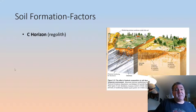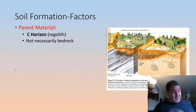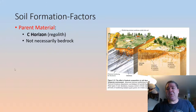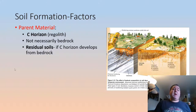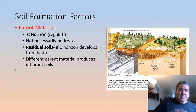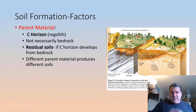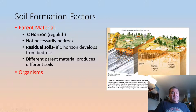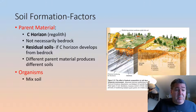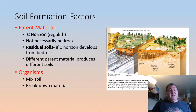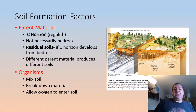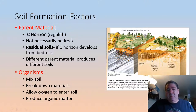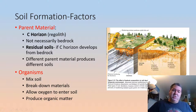The C horizon doesn't have to be bedrock. Here in Michigan, soils often develop on glacial till — a loose, unconsolidated sediment. When soils develop from bedrock like limestone or granite, they're called residual soils. The chemistry and physics of that parent material will have a big impact on the type of soil formed. Organisms also have a big impact: they mix the soil through bioturbation, help break down materials allowing oxygen to enter, and produce organic matter through eating, breathing, defecating, and dying in the soil.